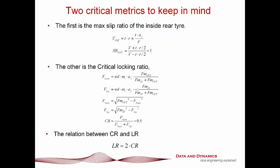Now, there are a couple of key metrics to keep in mind. The first is the max slip ratio of the inside rear tire. Now, the differential velocity of your wheels can be approximated by your track times your yaw acceleration divided by your velocity. The implication of that is that your max slip ratio is going to be V plus T times R on 2 divided by V minus T times R on 2 minus 1. What does that mean in plain English?